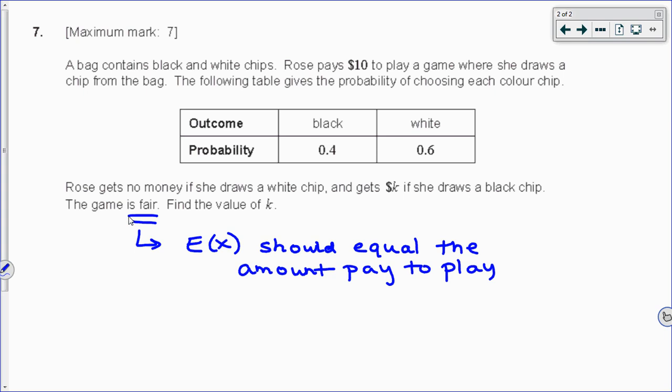The way we're going to set this up is to say a black chip is worth K dollars. So the probability of her earning K dollars is 0.4. If she reaches into the bag and pulls out one chip, and the whole game is based on that, what are the chances she's going to earn K dollars? 0.4. And a white chip is worth $0. So the expected value from this table, if it's a 0.4 chance that you're going to get K dollars and a 0.6 chance that you're going to get $0...